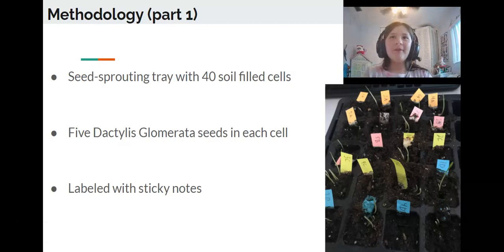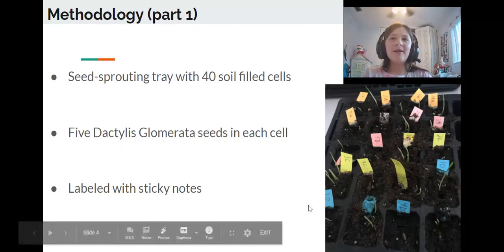Methodology Part 1. To conduct this experiment, the researcher received a seed-sprouting tray with 40 cells. The researcher filled half of these with 500 milliliters of Miracle-Gro potting mix in total, then placed five Dactylis glomerata seeds in each pot of soil, one centimeter deep and apart. Each cell was then labeled 1A through 5D with color-coded post-it notes and a pencil from top to bottom.